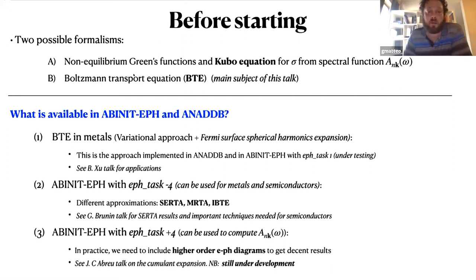What is available inside ABINIT? First of all I would like to stress that there are two different implementations. The one provided by ANADDB that is a post-processing tool in which we read the electron-phonon matrix elements produced by the DFPT code. Then we have another implementation that is directly integrated with ABINIT.